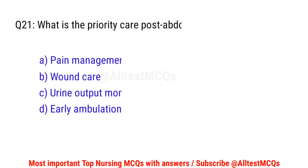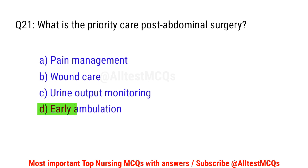Question number 21. What is the priority care for abdominal surgery? The correct option is D: Early ambulation.